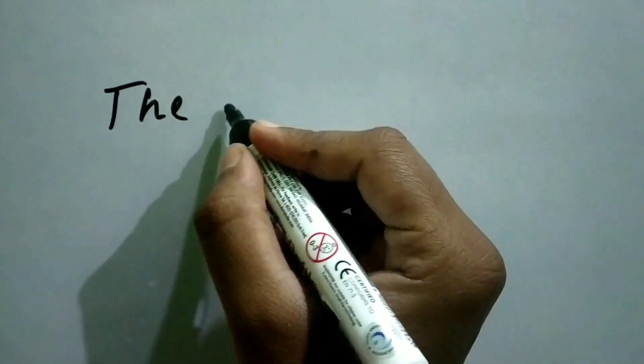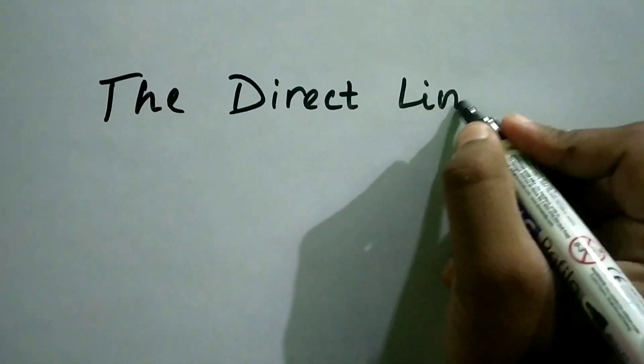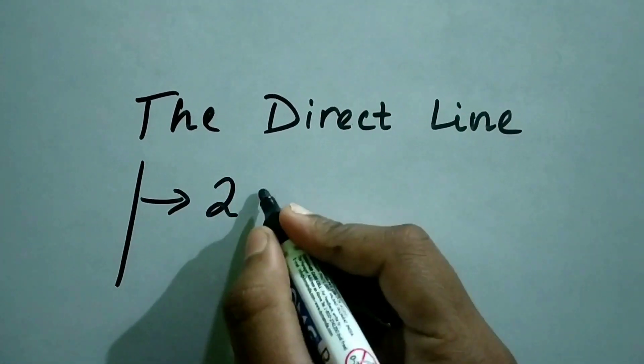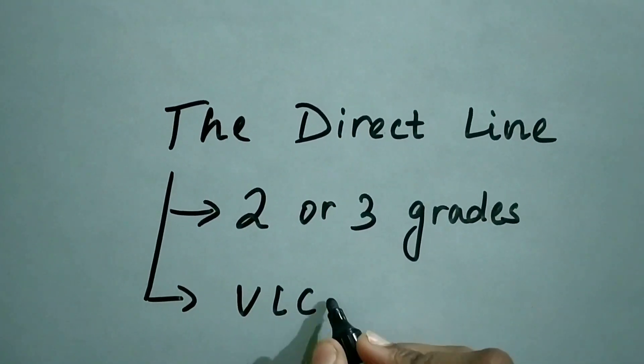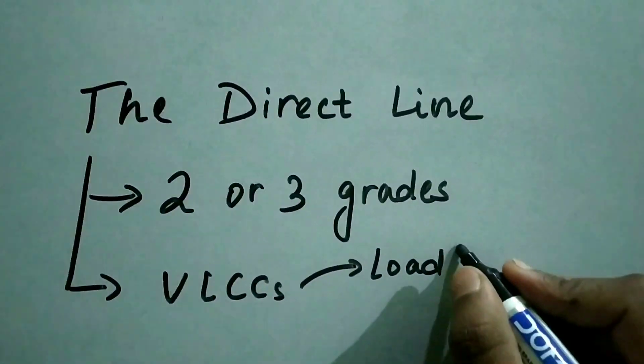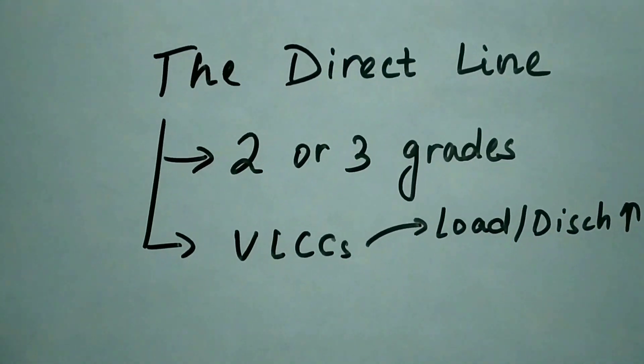Now let us talk about the direct line system. In this type of system, two or three grades of cargo can be carried and it is also used in VLCCs due to the same reason: quick loading and discharging.